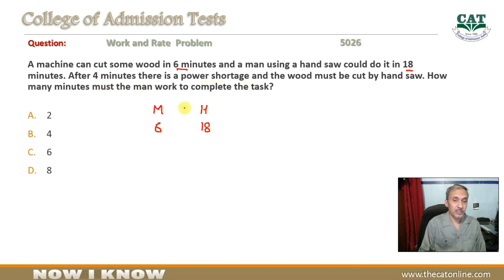चार minute के बाद power shortage हुई है तो दो minute का काम बच गया मशीन का। यह 2 minute का काम बचा हुआ है तो by hand ये काम कितनी देर में होगा? ज़ाहिर है मशीन ज्यादा time लगा रही है तो direct relation है क्योंकि दोनों एक जितना काम कर रहे हैं। अगर 6 से 18 है तो 2 से